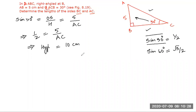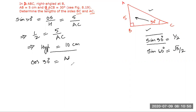That part is done. Now find BC. In which trigonometric ratio will BC and the hypotenuse both appear? For the 30-degree angle, BC is the adjacent side. So we know cos 30 degrees equals adjacent side by hypotenuse, which is BC by hypotenuse. We have already calculated the hypotenuse as 10.